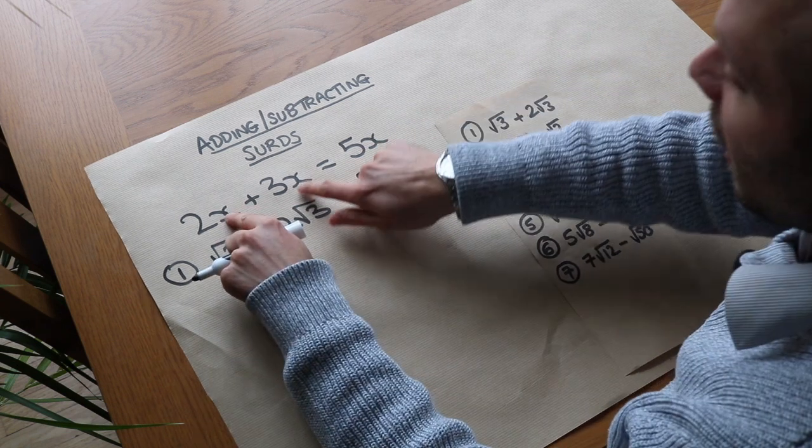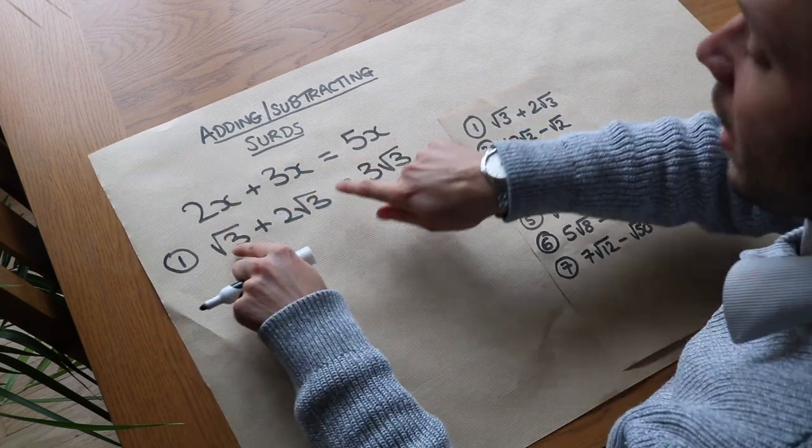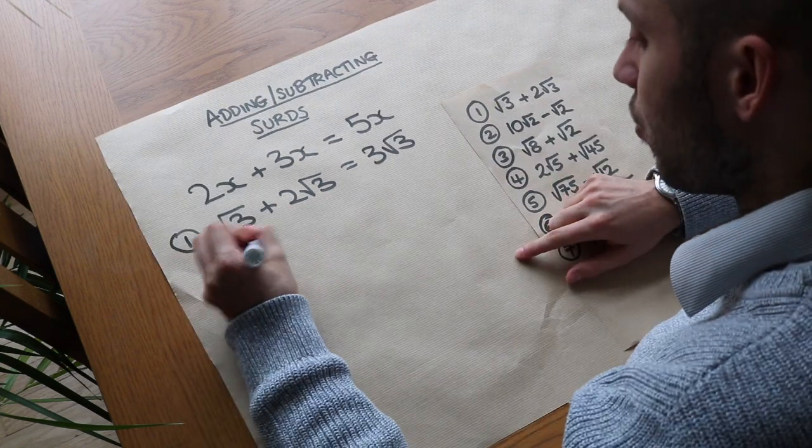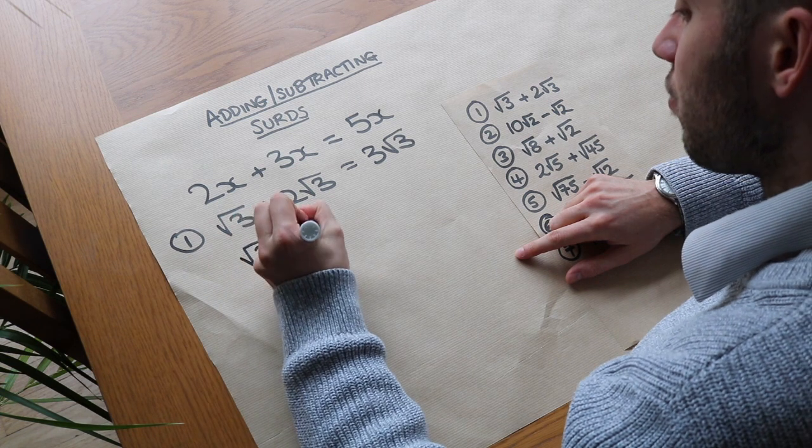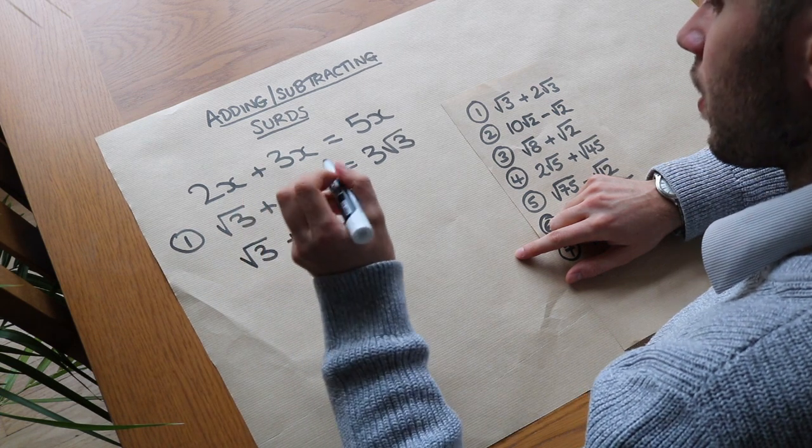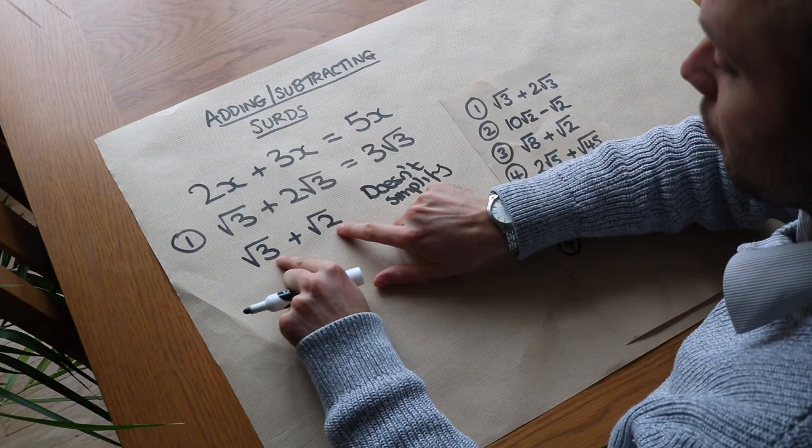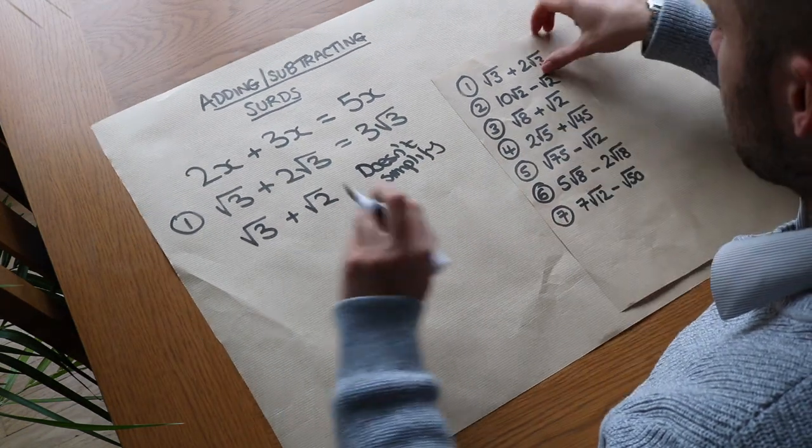So just like we can collect terms if they have the same variable, we can also collect surds if you have the same thing under the root. So if I had, for example, root 3 plus root 2, then I can't simplify that because the numbers under the roots don't match. Let's do some of these other ones.